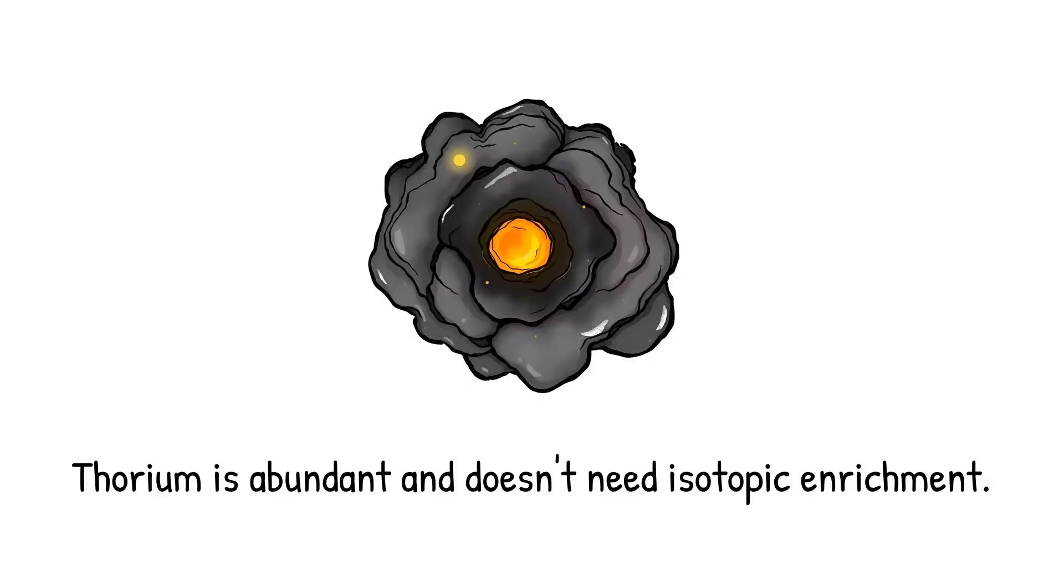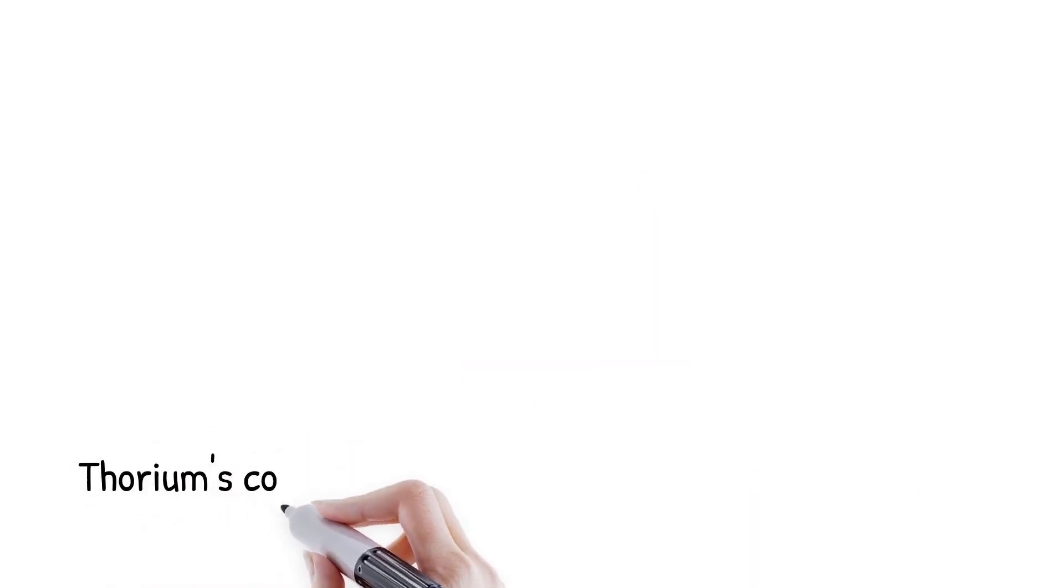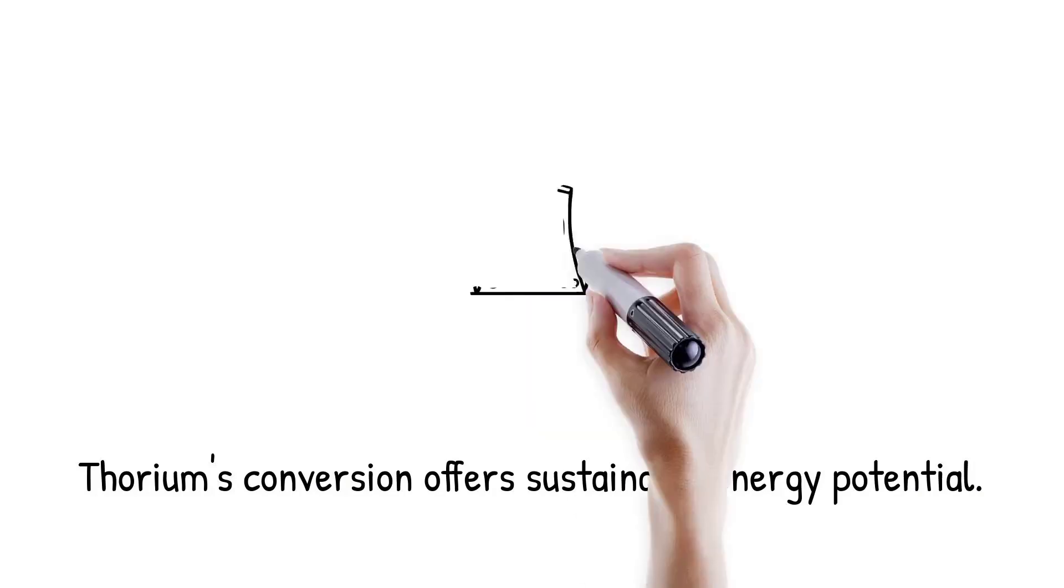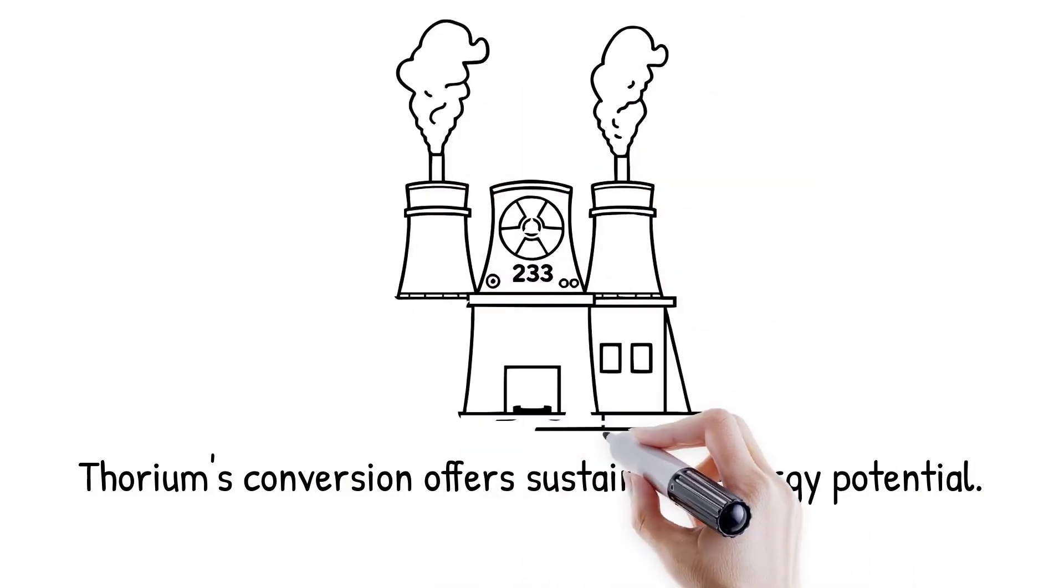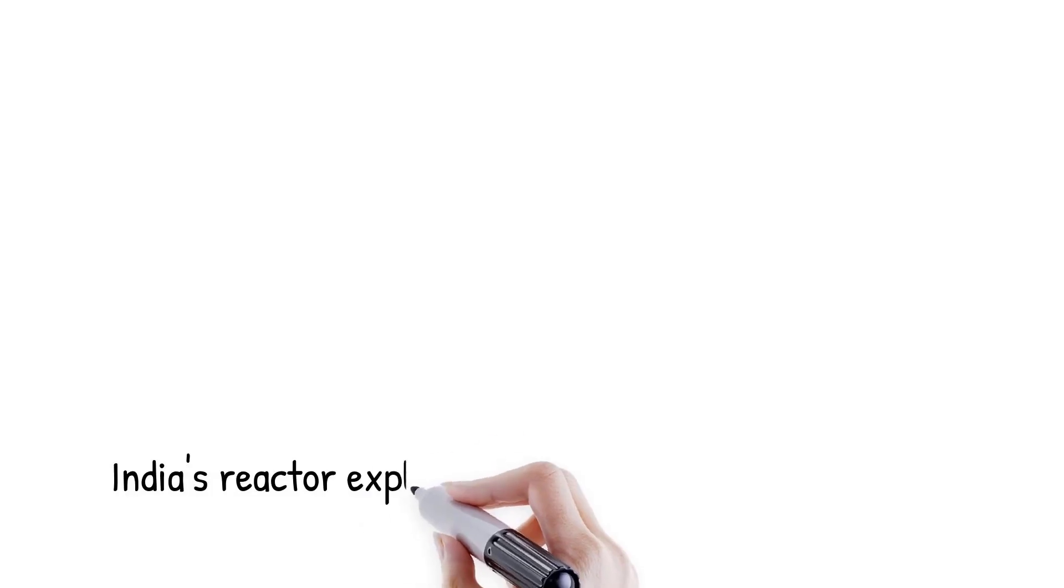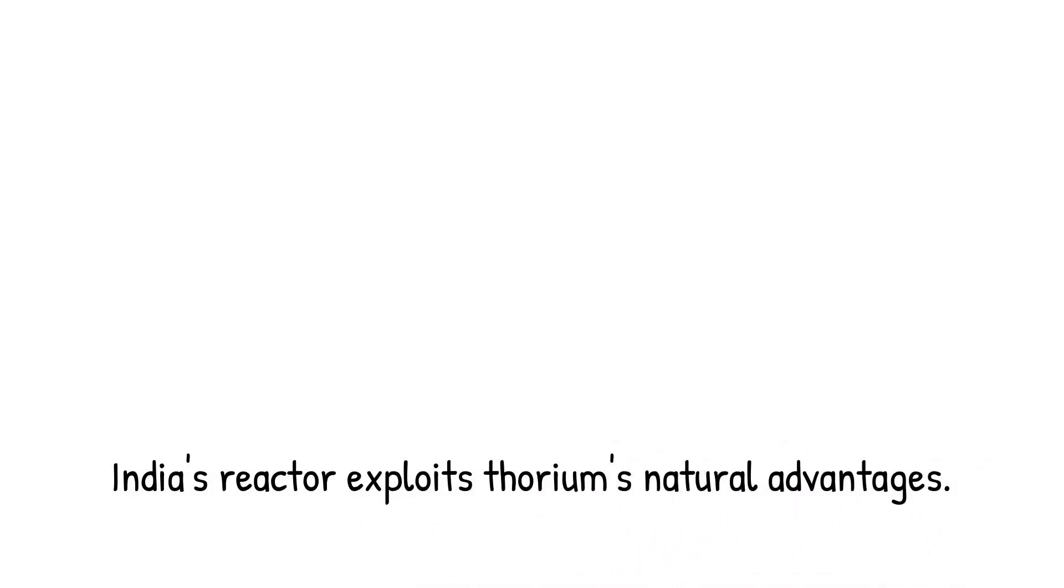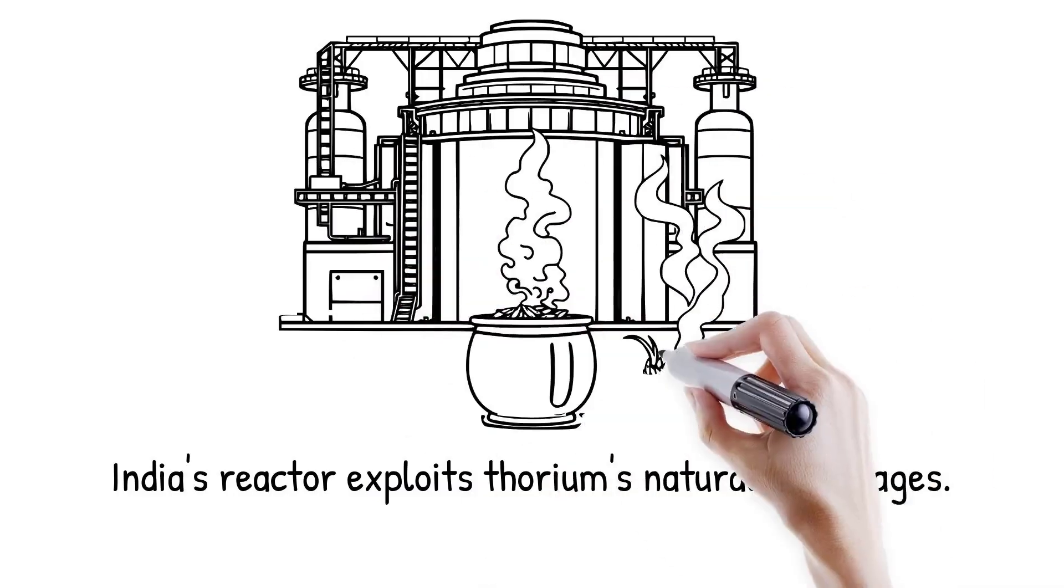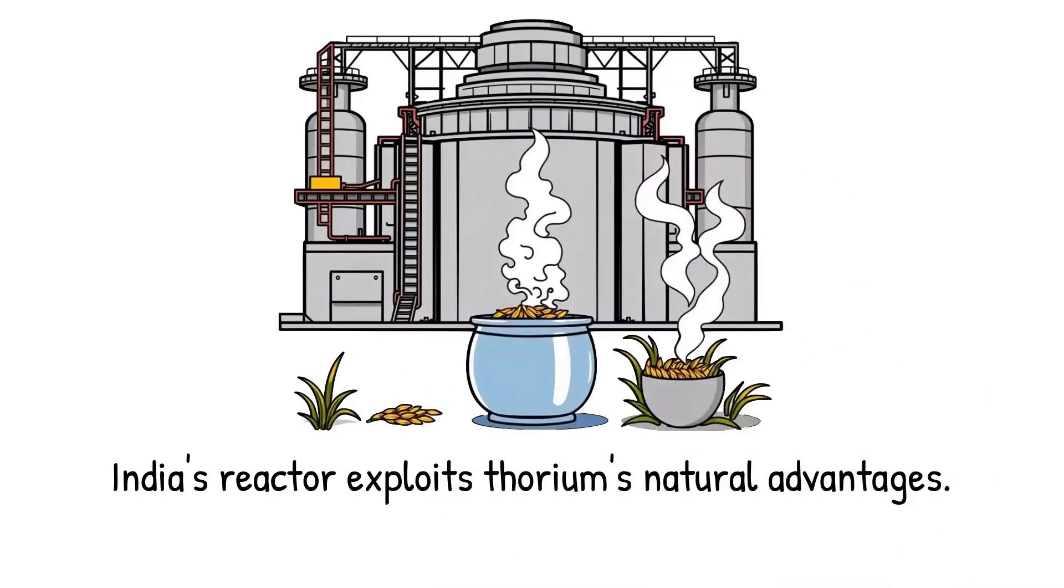Thorium also does not require isotopic enrichment, unlike uranium-235, which simplifies fuel preparation. The conversion of thorium into uranium-233 releases the potential for large-scale sustainable energy. These characteristics make thorium highly appealing as a next-generation nuclear fuel. For example, India has developed the advanced heavy water reactor specifically to exploit thorium's natural advantages.